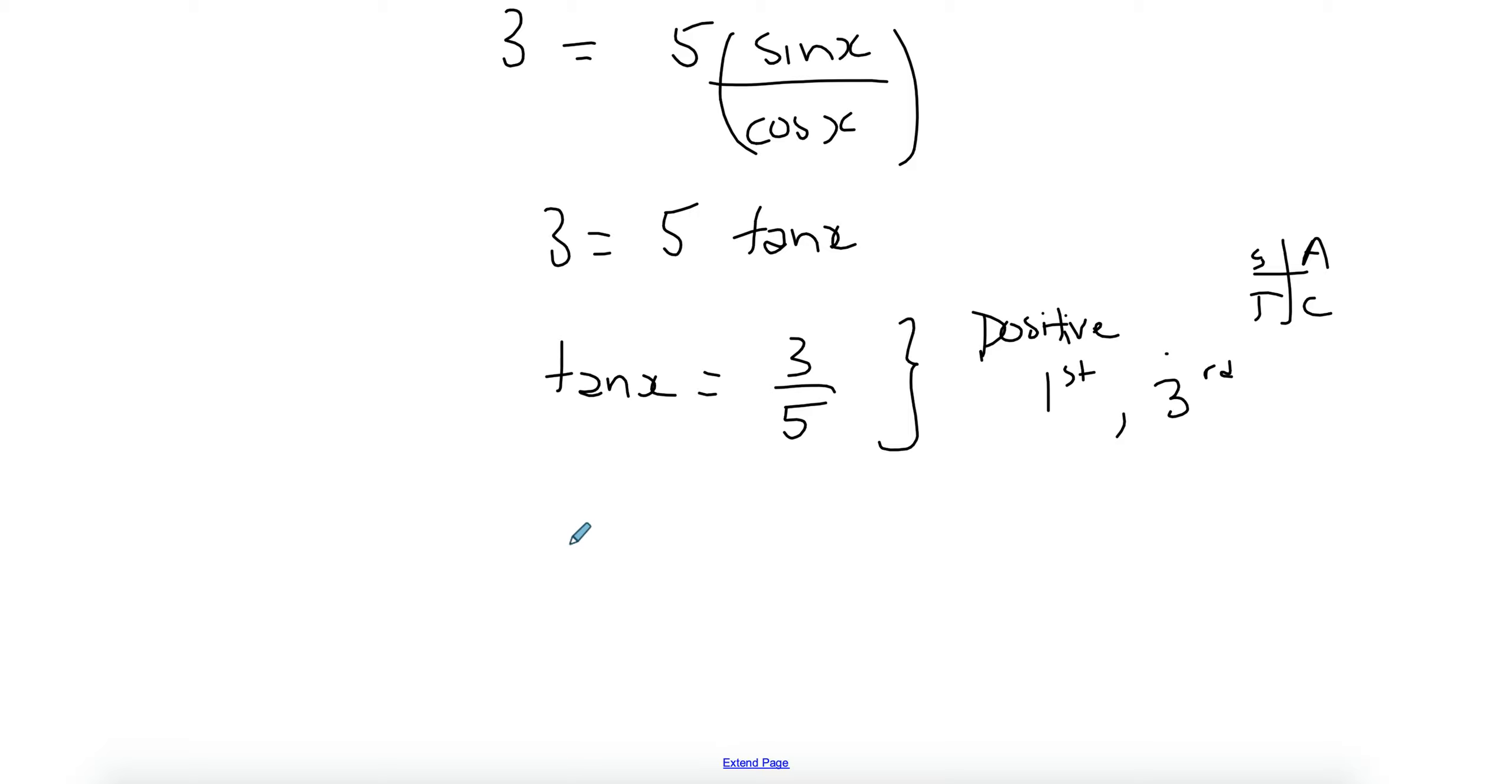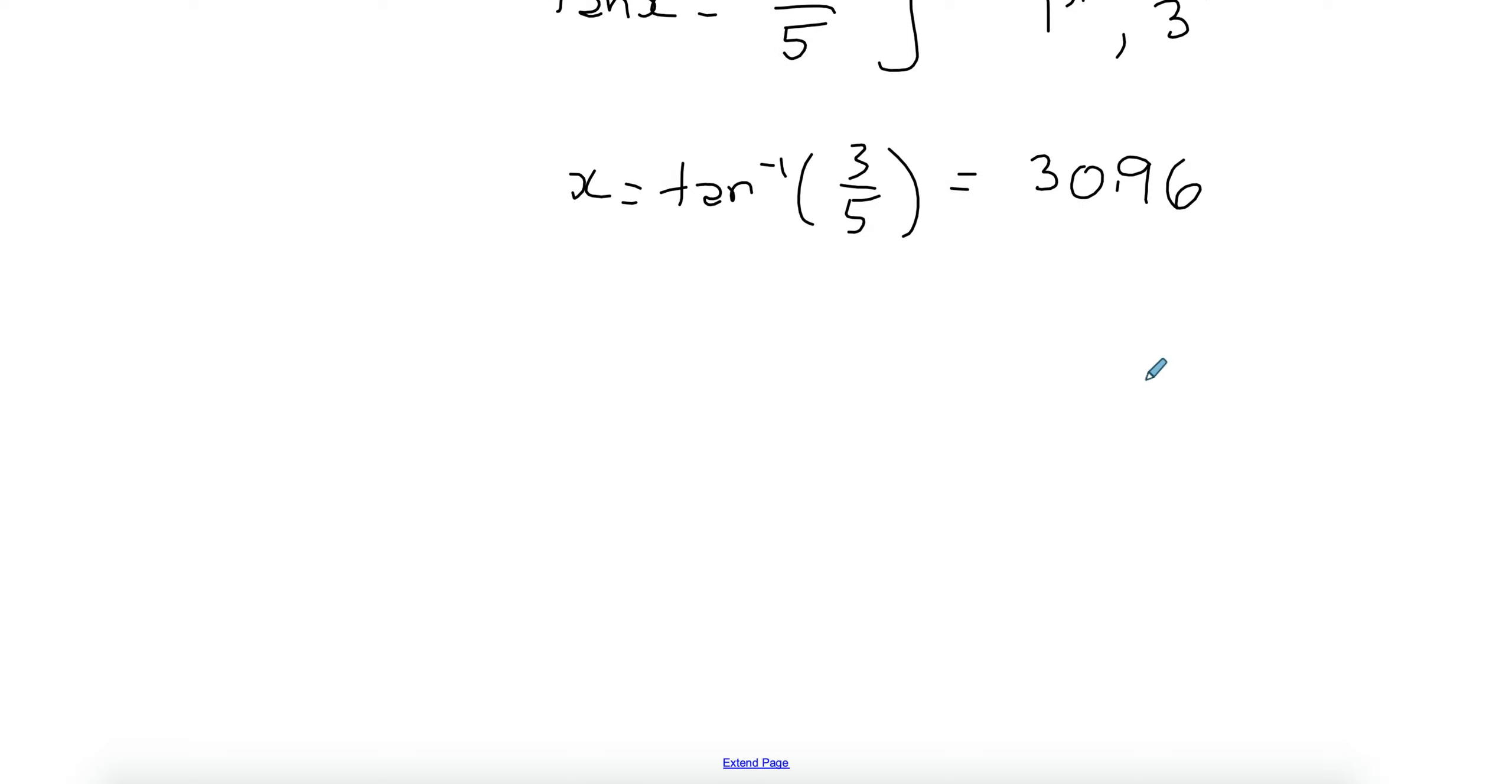And so this is positive already, so I can just take the inverse and solve it. So if I go and make sure your calculator is on degree, so I have tan inverse of 3 over 5. So this will give me 30.96. So that's my first quadrant.